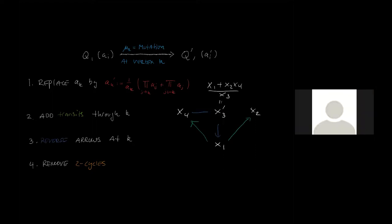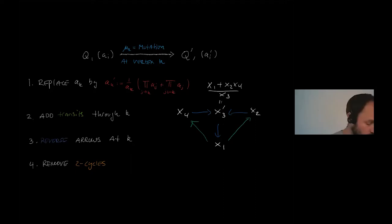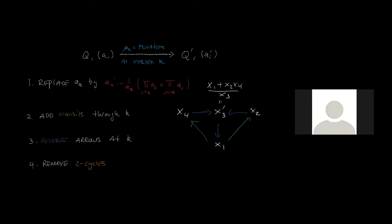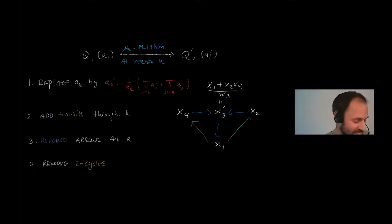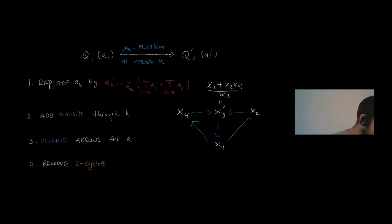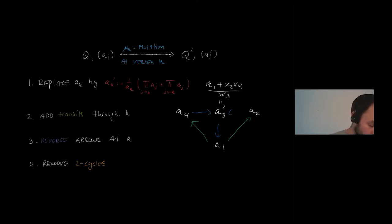As pointed out, the variables should be labeled as a's rather than x's — there are A and X cluster varieties, so it is a little unfortunate. There is a dual procedure on the X side, where the quiver manipulation is the same but the variables transform differently.